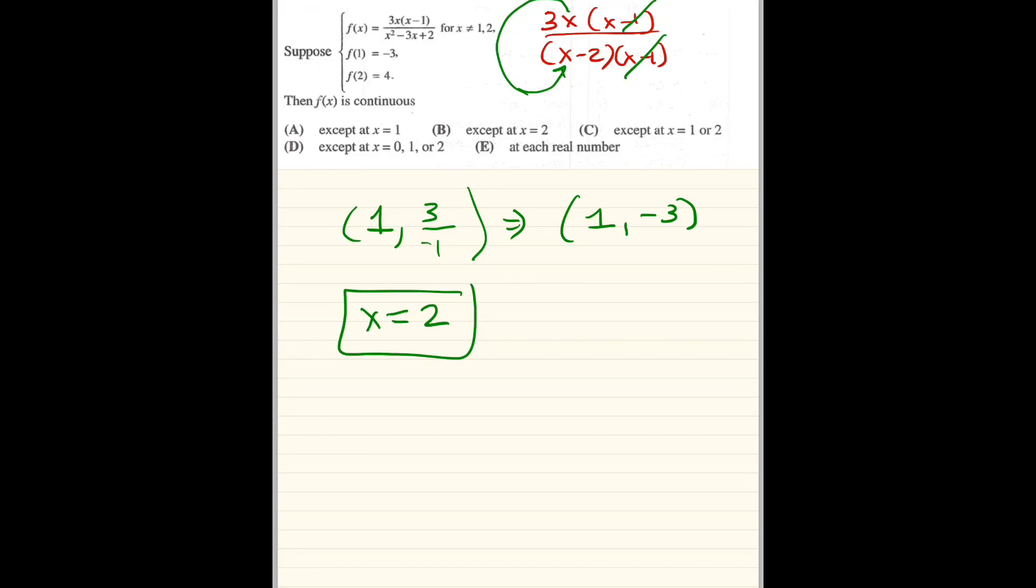And then we have a vertical asymptote or an infinite discontinuity that cannot be removed at x equals 2. Now, the great part about this is they filled in f of 1 to be negative 3. So that's wonderful, because what happened here was it didn't work for positive 1 or positive 2. But at positive 1, they filled it in with negative 3. So that closes the hole. And then at f equals 2, they gave you 4. But we know that this is a whole vertical asymptote. So this could never be fixed. So f of x is continuous everywhere except for x equals 2.